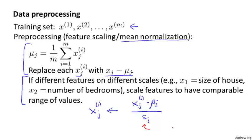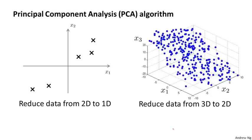Having done this sort of data pre-processing, here's what the PCA algorithm does. We saw from the previous video that what PCA does is it tries to find a lower dimensional subspace onto which to project the data, so as to minimize the squared projection errors.